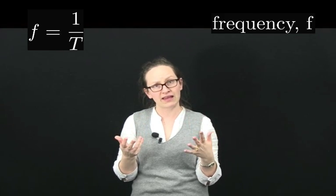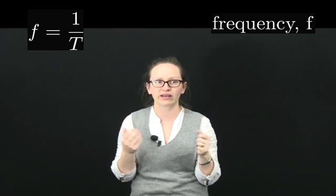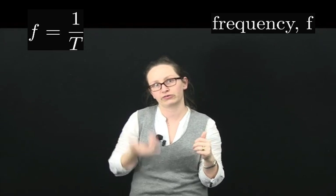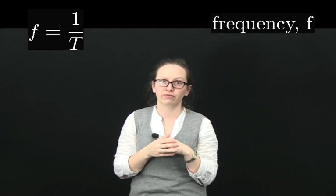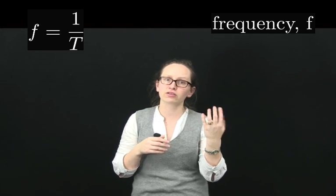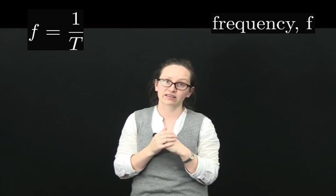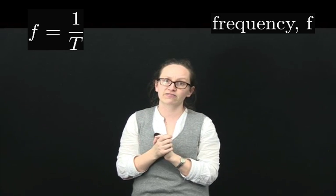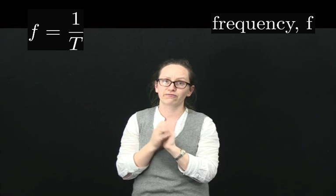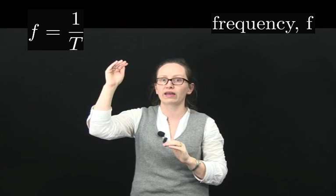The frequency of the wave is the inverse of the period. So it's how often these crests pass you. The units for the frequency are hertz or inverse second. So frequency is given the symbol f and the frequency is equal to 1 over T.